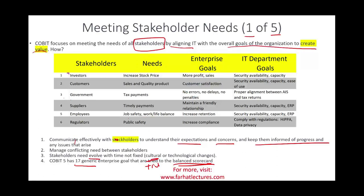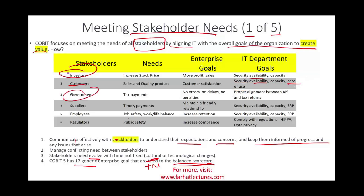For investors, IT goals focus on security, availability, and capacity — providing secure financial statements, available information, and capacity to operate to increase stock price. For customers, security, availability, and capacity mean a secure checkout, an available website, and ease of use. For government, proper alignment between your accounting information system and tax return means the system can automatically feed your tax return — no errors, no delays, no penalties in preparing your taxes.